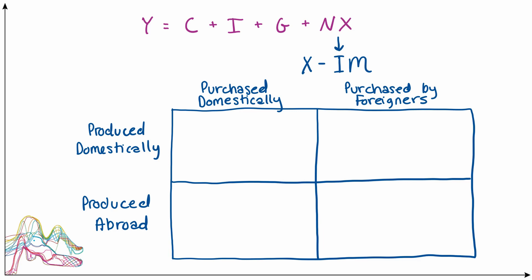This gives us four different buckets in which to put various goods and services. But remember, because this Y, this aggregate expenditure, also represents production or GDP, this Y is only supposed to represent things that are actually produced domestically. So we can think of this Y as comprising these two boxes here.